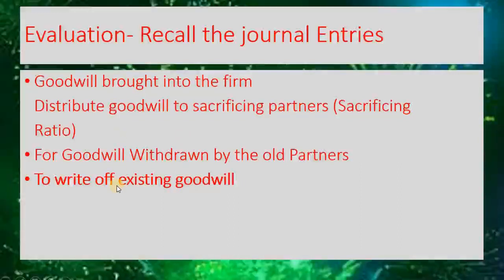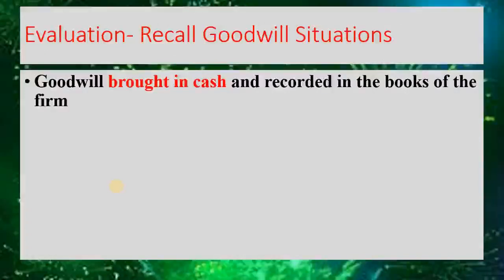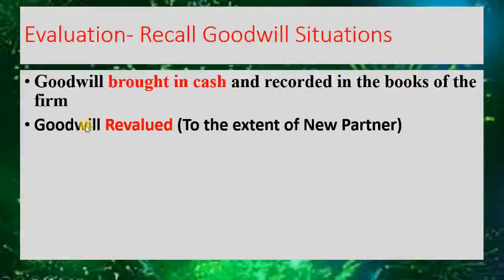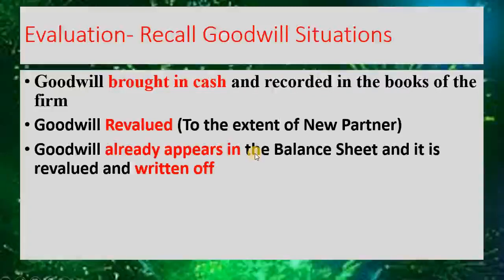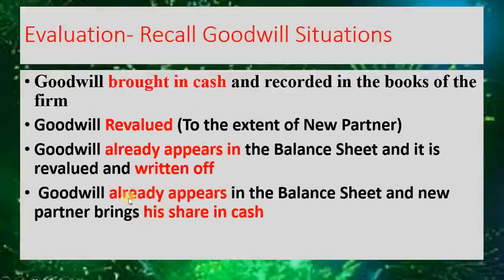If you remember these four transaction journal entries, it will be easier to complete any problem. Recall the goodwill situations: first, goodwill brought in cash; second, goodwill revaluation; third, goodwill already appears in the balance sheet, revaluation and written off; and the last one, already appears in the balance sheet and goodwill brought in cash to the extent of the new partner's share.